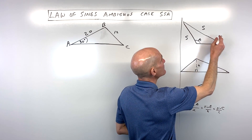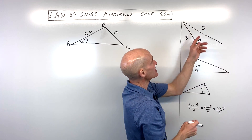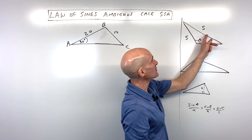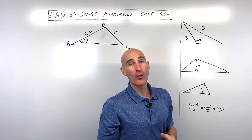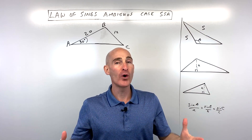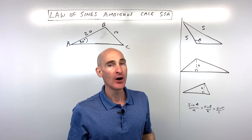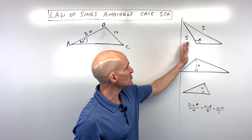What happens if the longest side is across from the obtuse angle? Well, then you just have one triangle. So that's pretty straightforward.